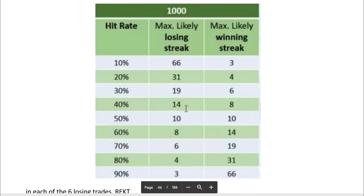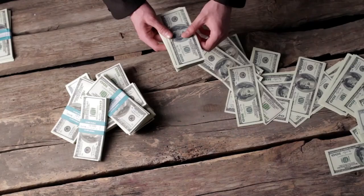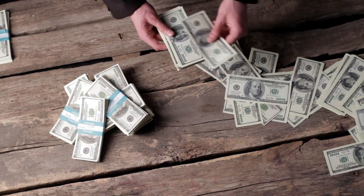Imagine someone with a hit rate of 70% who risked 40% of their capital on each of those six losing trades — no money left, period. You've lost all your money. It might come as a surprise that the most successful long-term traders have a strike rate of around 40%, not even close to 70%. The best traders the author knows, and even the author himself, don't have that high a winning rate.